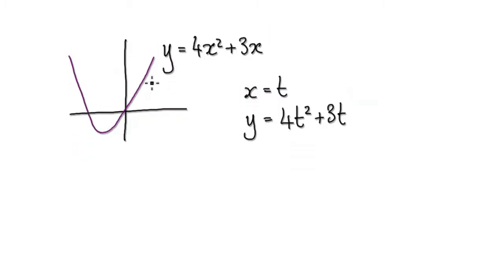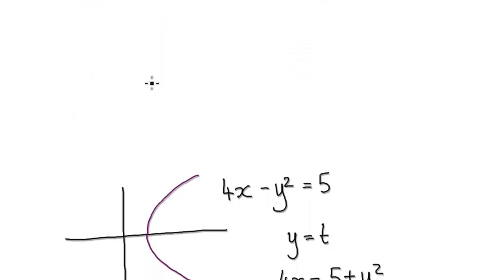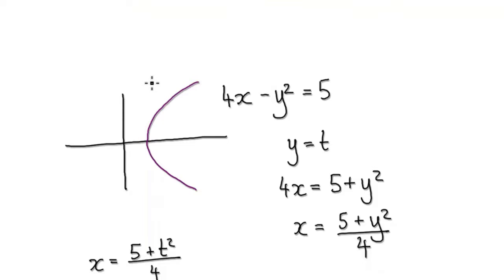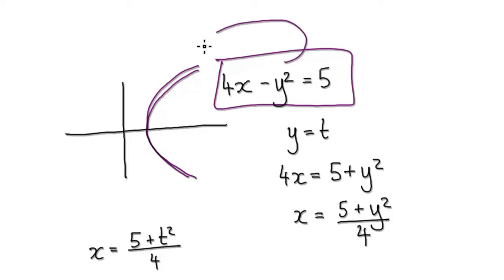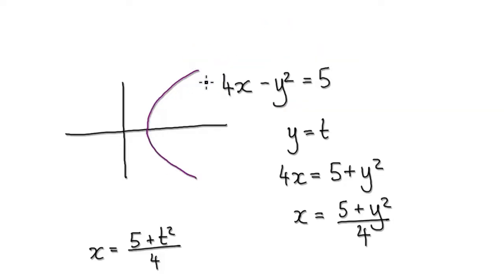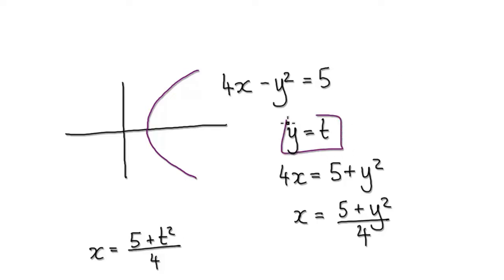Here's another example. Let's say you've been given this equation here. This equation will generate this graph. Now to generate your parametric equations, you don't always have to have x equals t — you can have y equals t. So let's start out with y being equal to t.